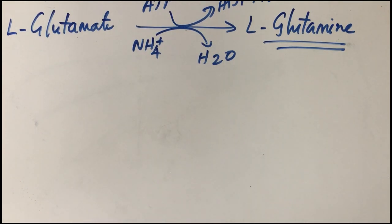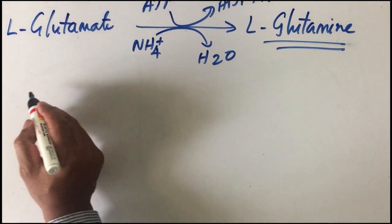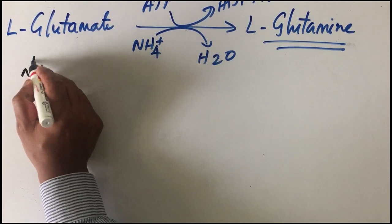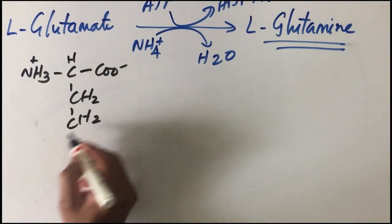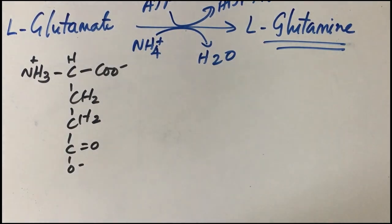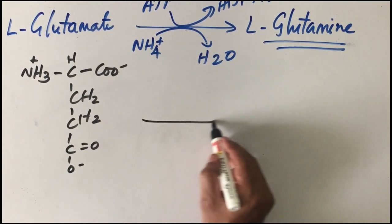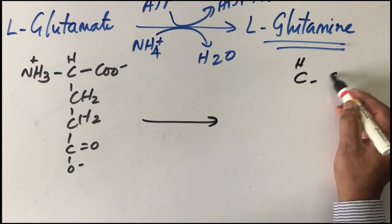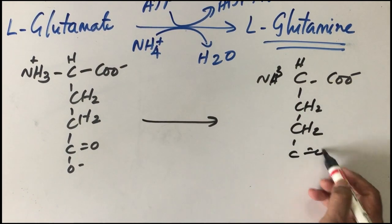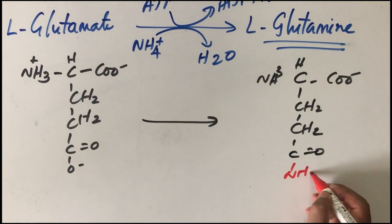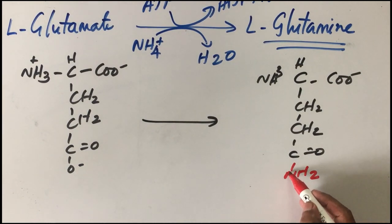Let us look at the structure to get clarity on the mechanism. This is the structure of glutamate: CH2 twice, then the carboxyl group. The new amino group is added to the amide nitrogen. This is glutamine, which is a neutral molecule.